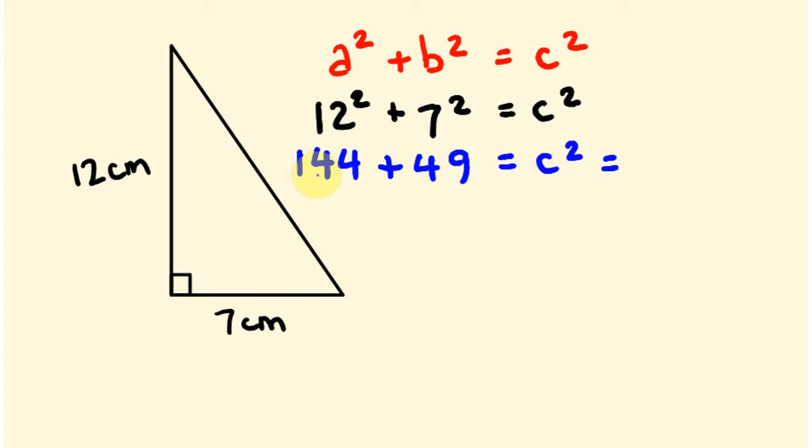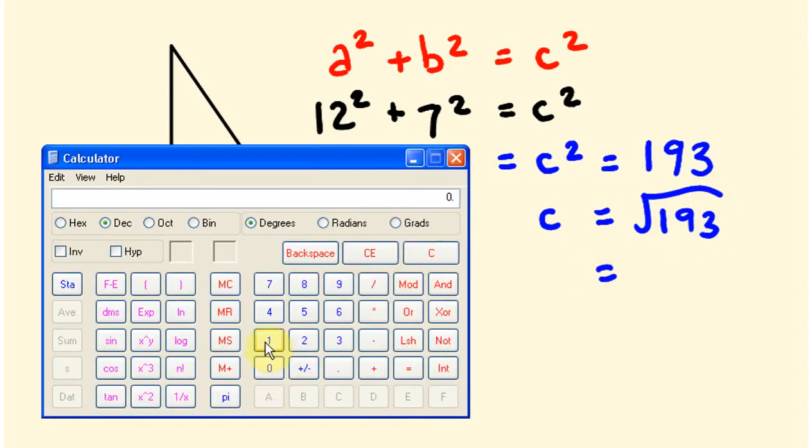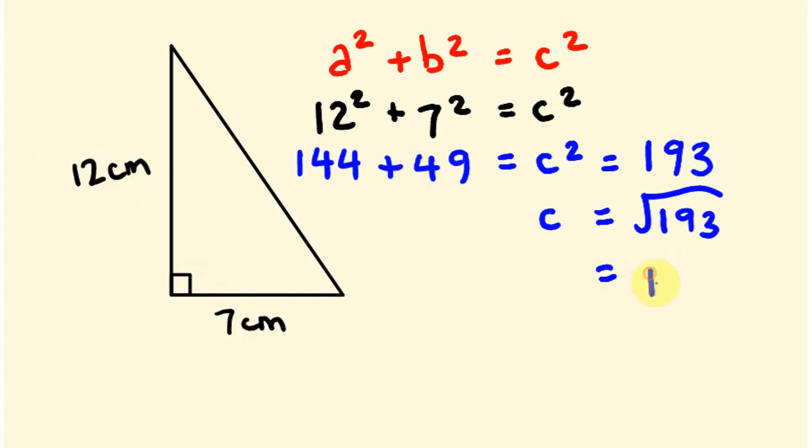Which is equal to 49 plus 144 is 193. That means c is going to be equal to the square root of 193 and that off the top of my head I don't know, I'll be honest. So I'm going to go 193 inverse square, oh I think I got the wrong one there. Let's type that in again, 193 inverse square is 13.89, 13.89 centimeters.